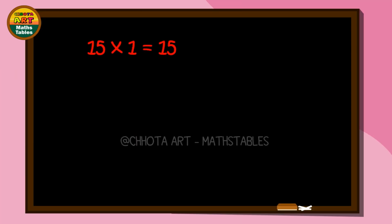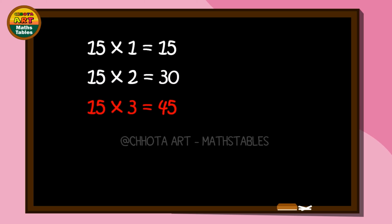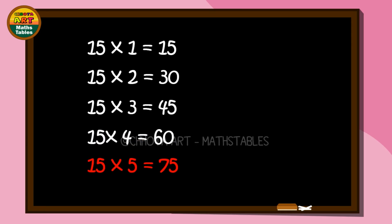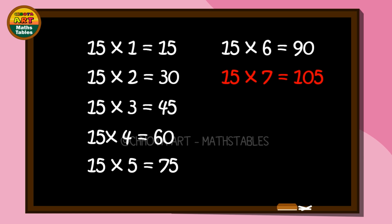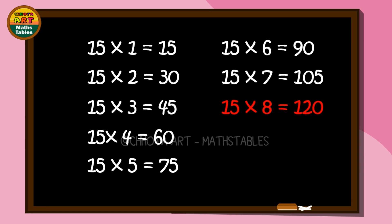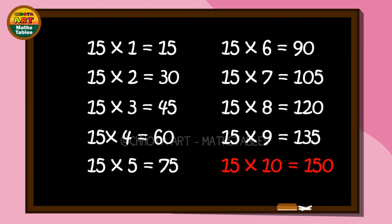Fifteen ones are fifteen. Fifteen twos are thirty. Fifteen threes are forty-five. Fifteen fours are sixty. Fifteen fives are seventy-five. 15 sixes are 90. 15 sevens are 105. 15 eights are 120. 15 nines are 135. 15 tens are 150.